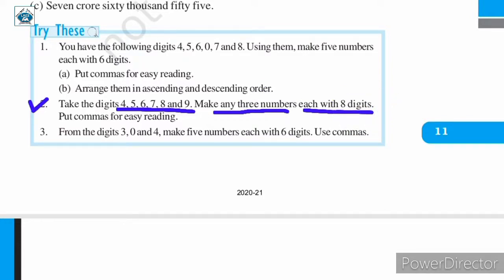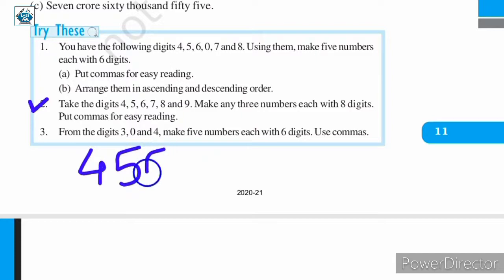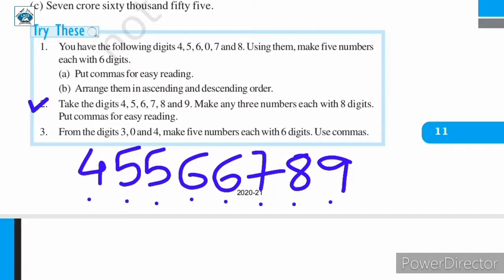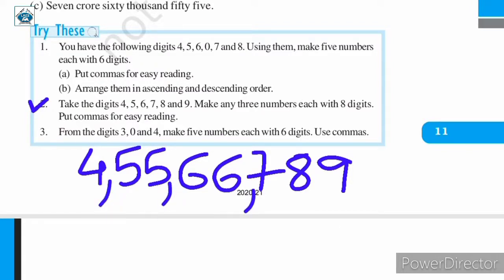In this case, we will have to repeat some of the given digits. So I am making a number: four, five, five, six, six, seven, eight, nine. This eight-digit number was easy to make — I just repeated two digits. Putting commas: comma after three digits, comma after two digits, comma after two digits. So this reads as four crore, fifty-five lakh, sixty-six thousand, seven hundred eighty-nine.